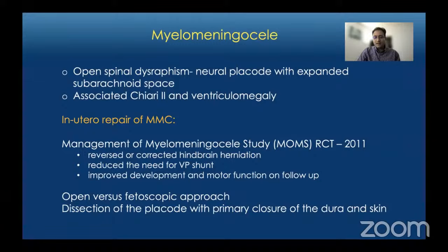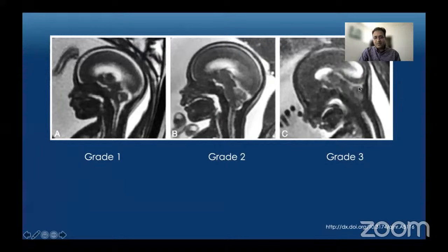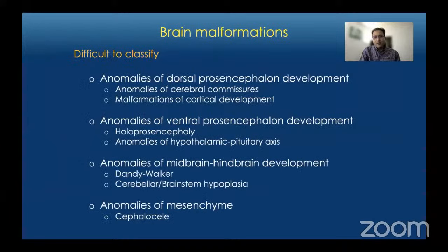There is a grading system for Chiari 2 malformation used to follow up patients after in utero repair. Grade 1 is normal posterior fossa with visible cisterna magna, normal-sized fourth ventricle, and no effacement of basal cisterns. Grade 2 has effacement of the fourth ventricle but preserved cisterna magna. Grade 3 is most severe with effacement of both the fourth ventricle and cisterna magna plus crowding at the foramen magnum. In our case the patient initially had Grade 3 Chiari 2, which improved to Grade 1 on follow-up.